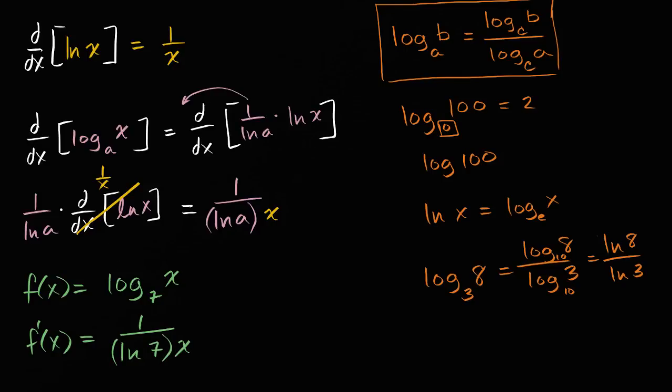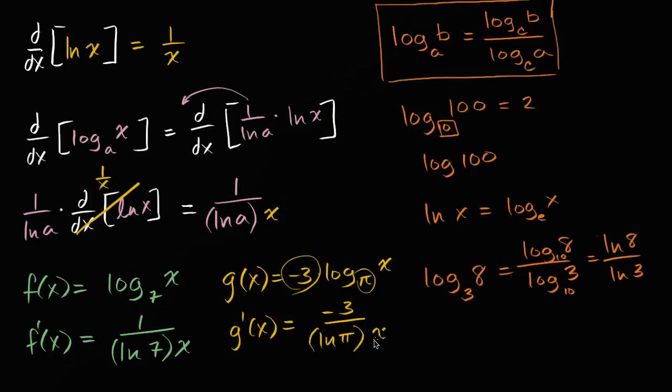If we had a constant out front, if we had for example g of x is equal to negative 3 times log base pi of x, well g prime of x would be equal to, let me be careful, I have this constant out here, so it would be negative 3 over the natural log of pi, so it's just the natural log of this number, times x. So hopefully that gives you a hang of things.